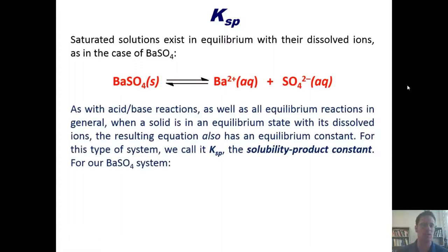As with acid-base reactions, as well as all equilibrium reactions in general, when a solid is in an equilibrium state with its dissolved ions, the resulting equation also has an equilibrium constant. For this type of system, we call it Ksp, the solubility product constant.